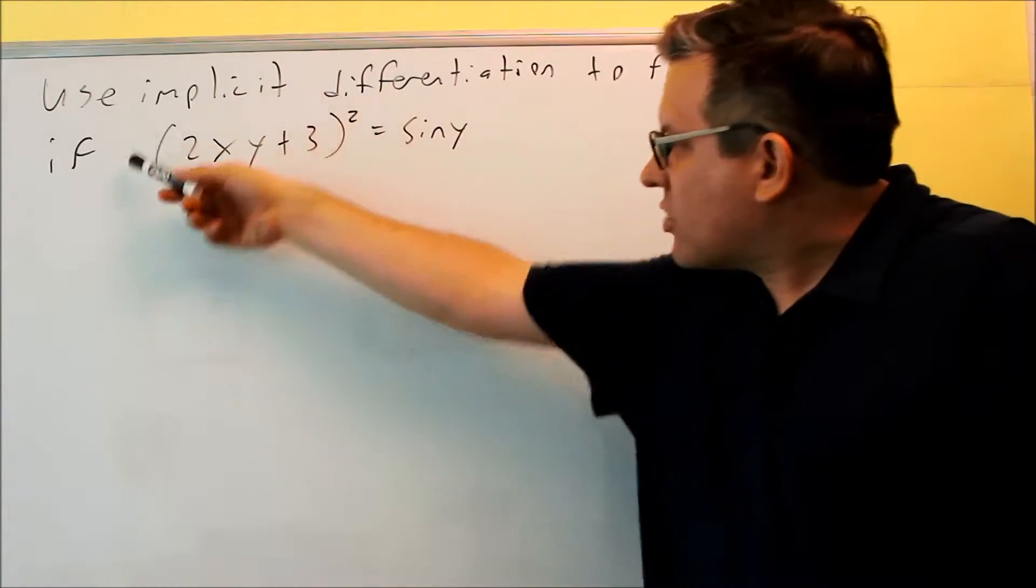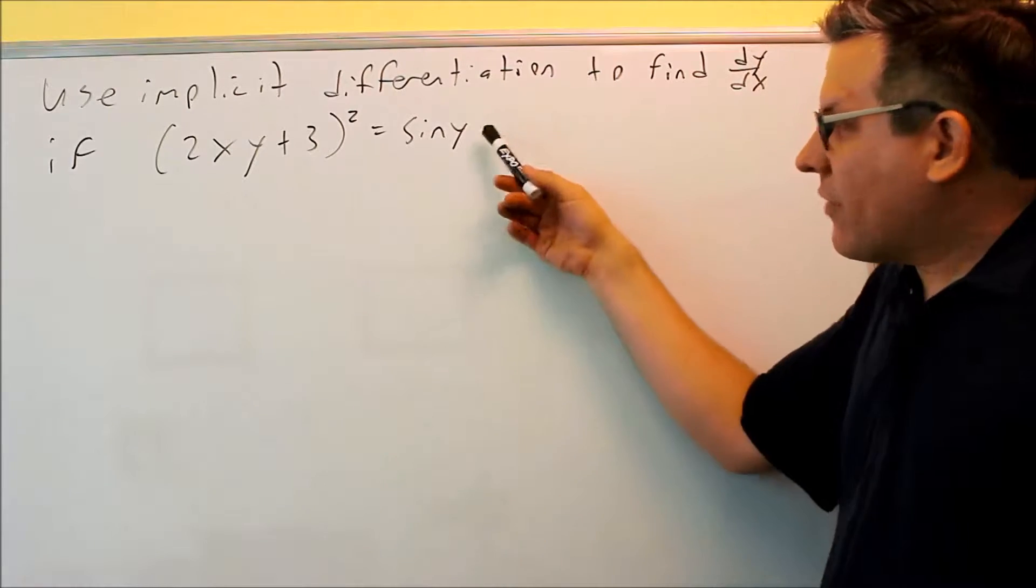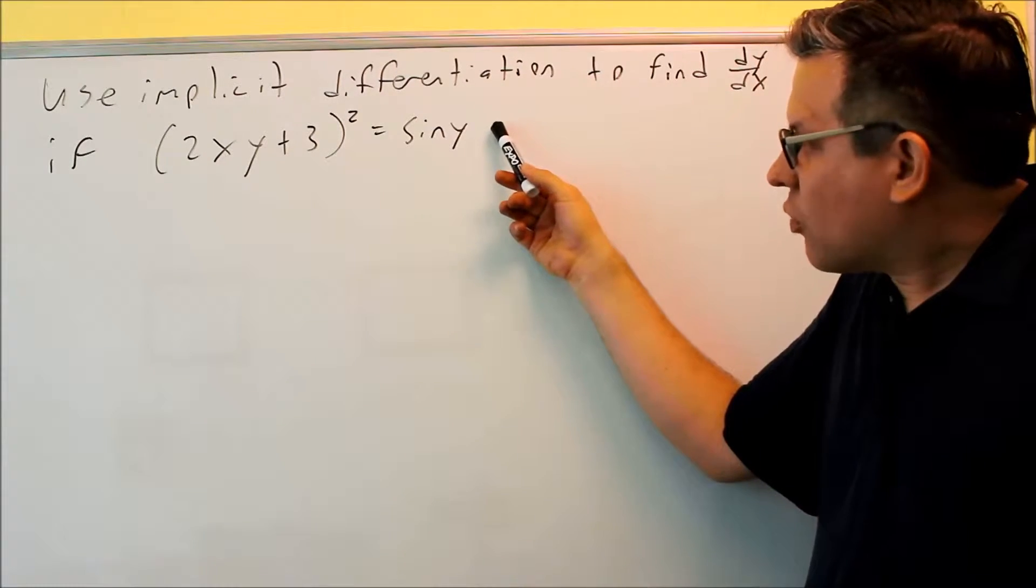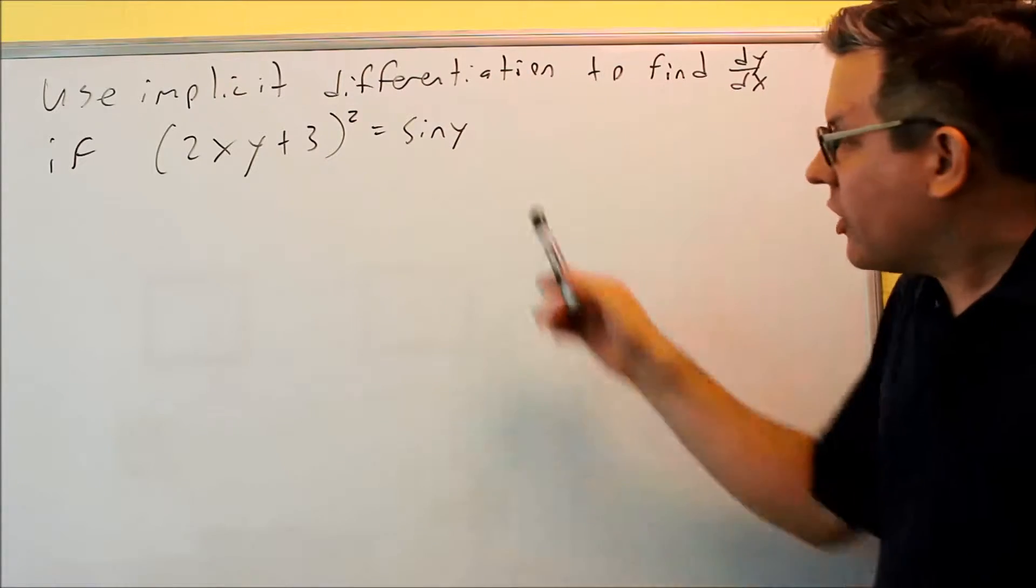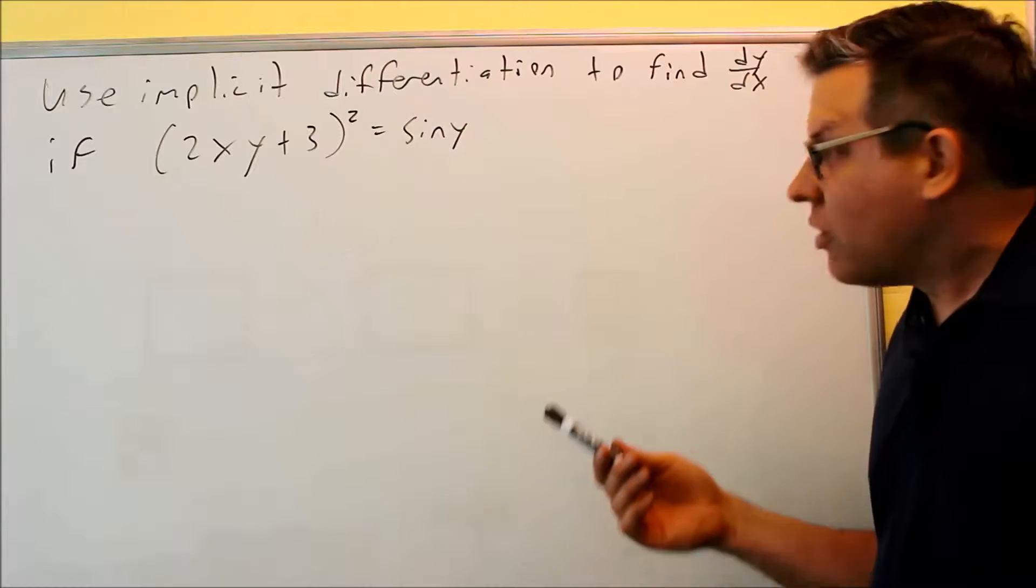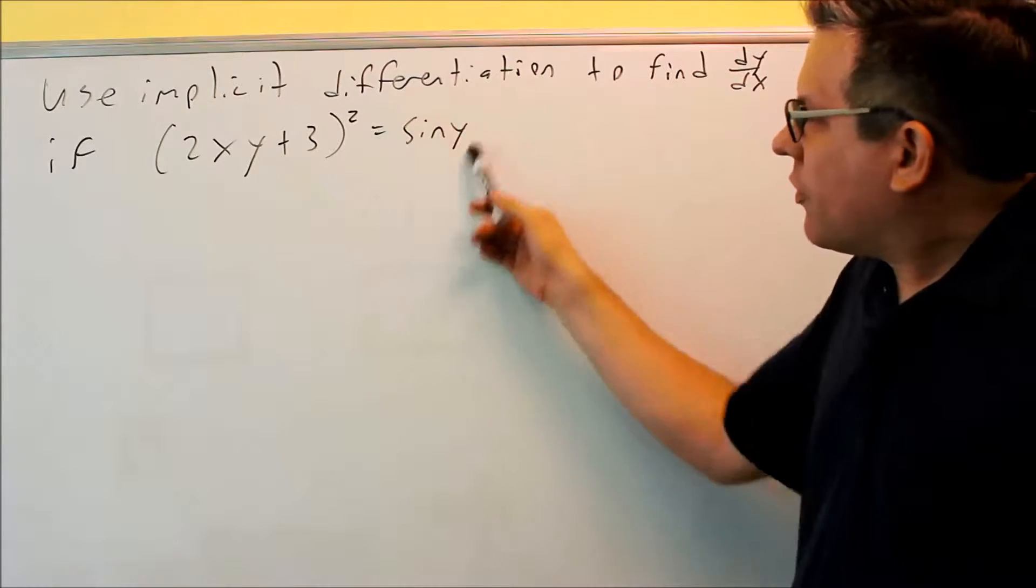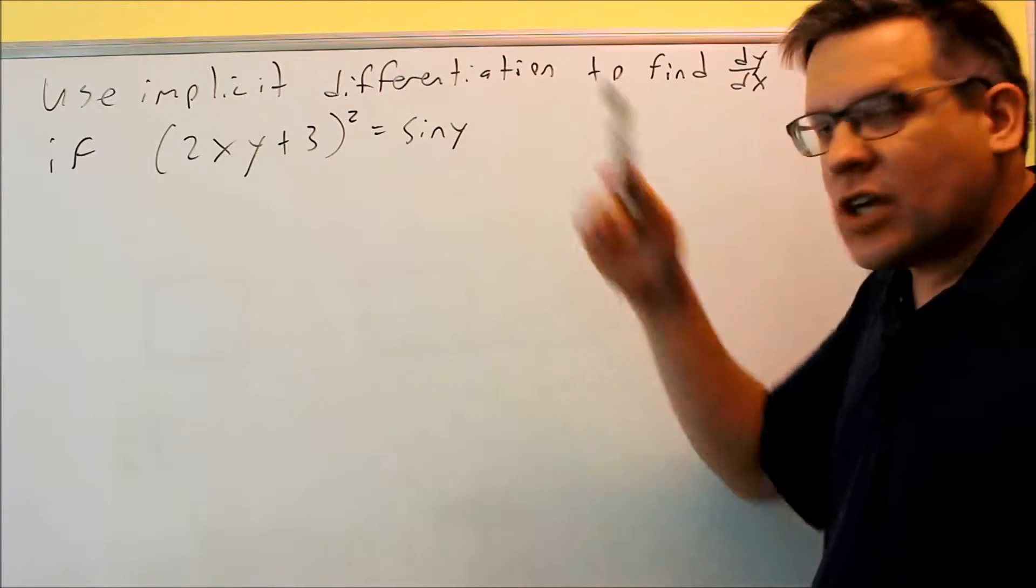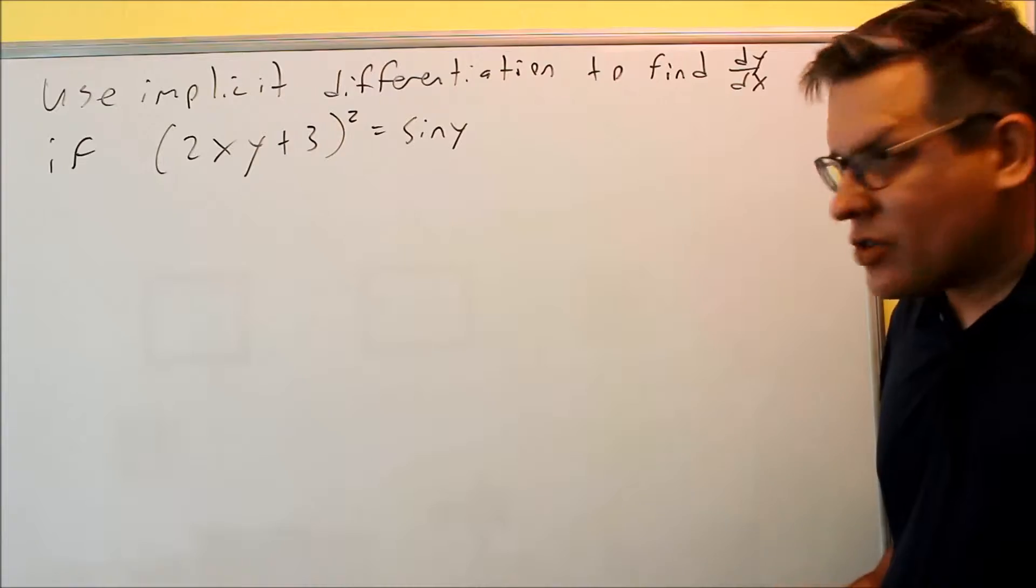So we're going to do the outside function and multiply it by a derivative of the inside. Now we have to do that also to the sin y, and the reason why is because in this case the y, we don't know what it is, but whenever you have a y like that inside something, you got to do chain as well, and that's where you end up getting this dy/dx when you do that. So we'll do the derivative of the outside, then times the derivative of the inside.